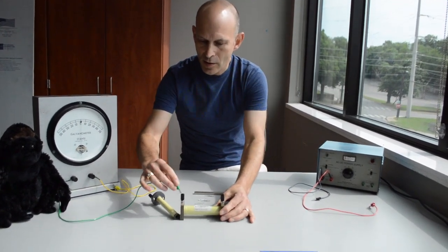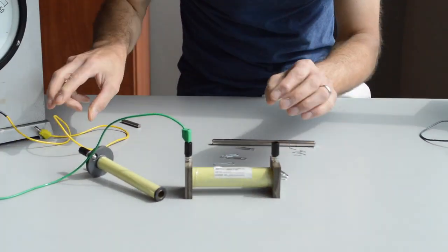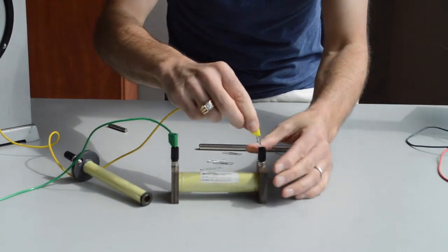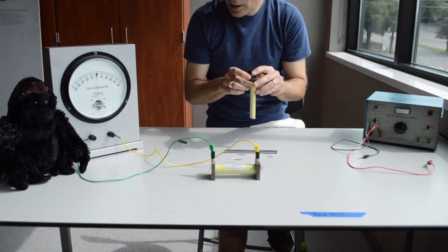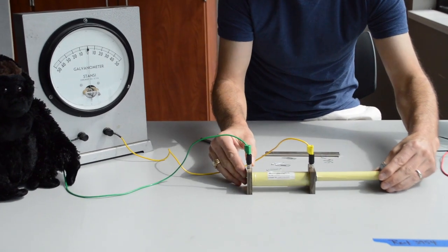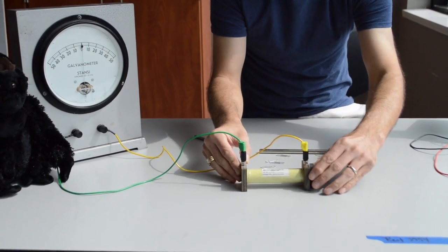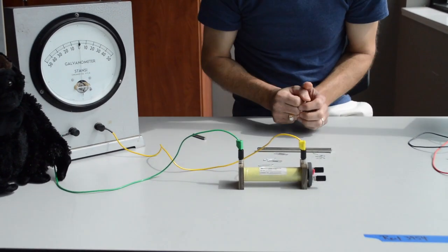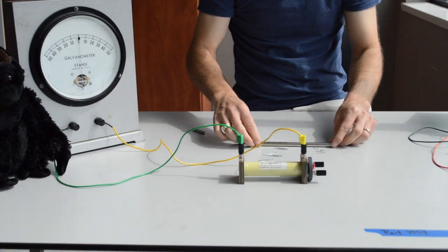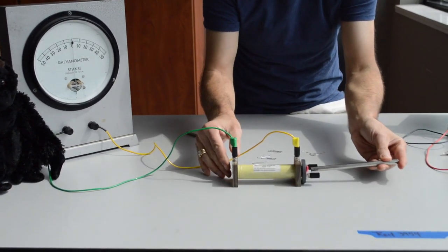I'm going to connect the outer coil to the meter with these two wires. And I want you to watch the meter. I'm going to take the inner coil and insert it. Nothing happens on the meter when the inner coil is inserted or moved back and forth. But if I take the iron core and insert it, we'll see if something happens.